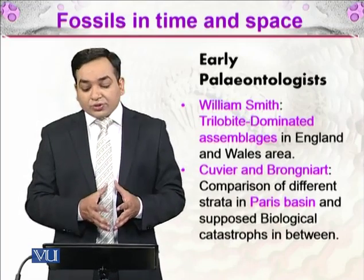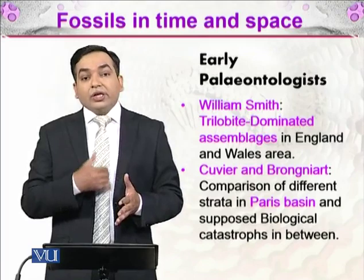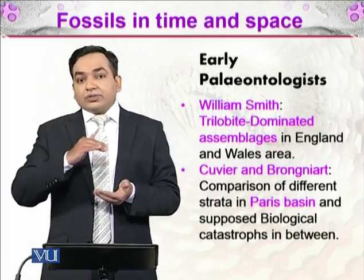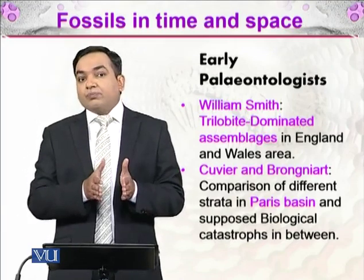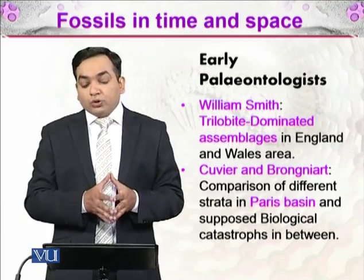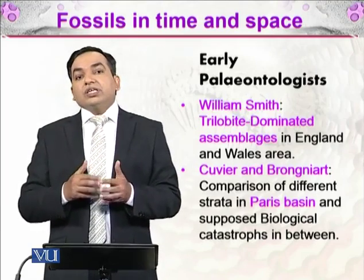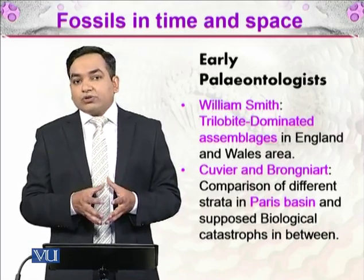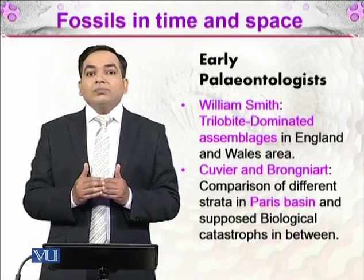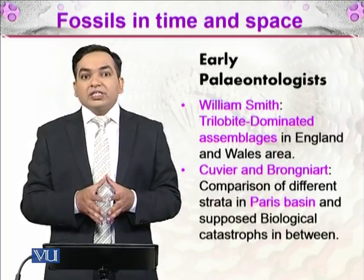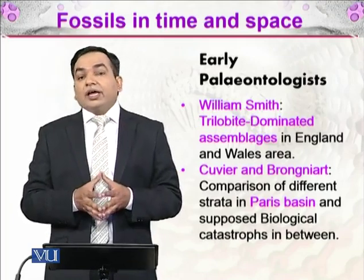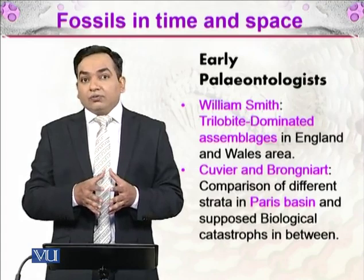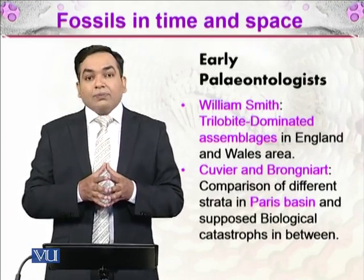Cuvier and Brongniart constructed layers with fossil information between them and found that these strata could be differentiated and separated into individual layers. These individual layers are separated by biological catastrophes — periods in which a large number of organisms were dying due to events such as climate change or asteroid impacts.